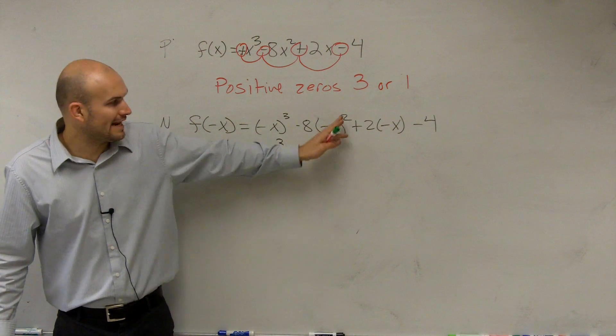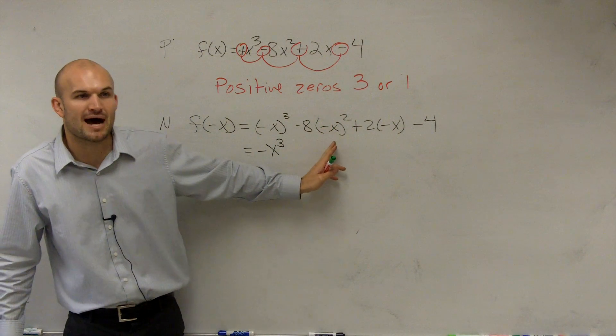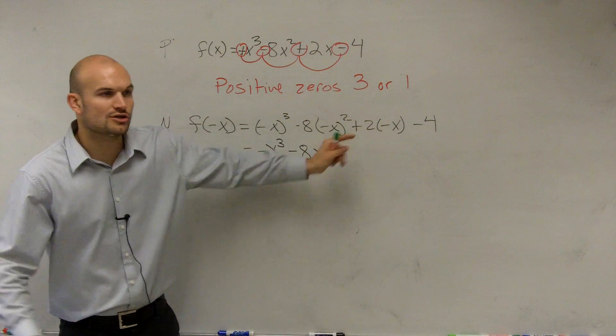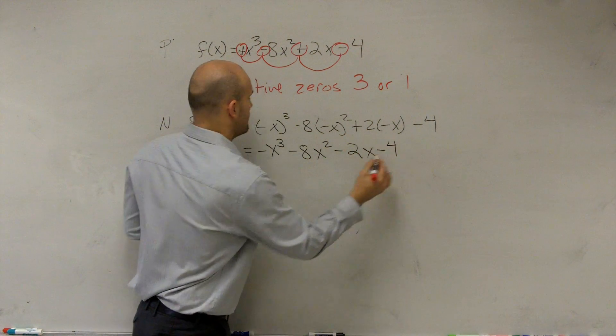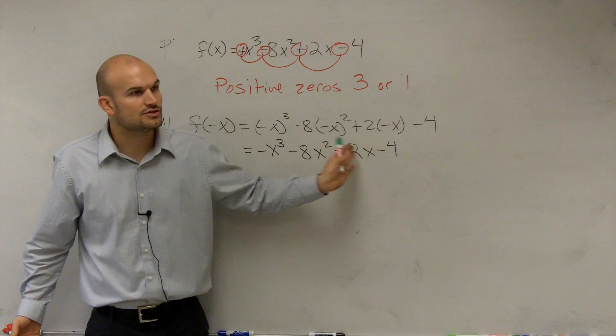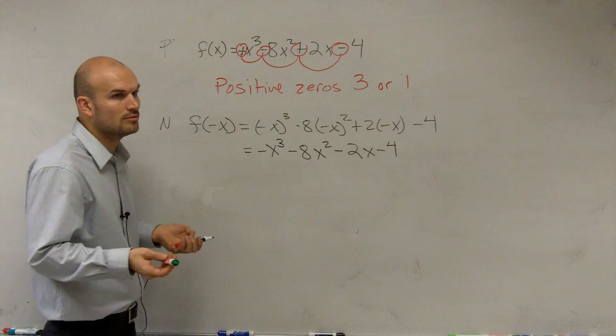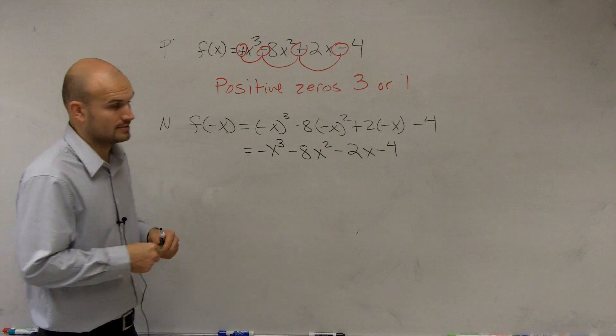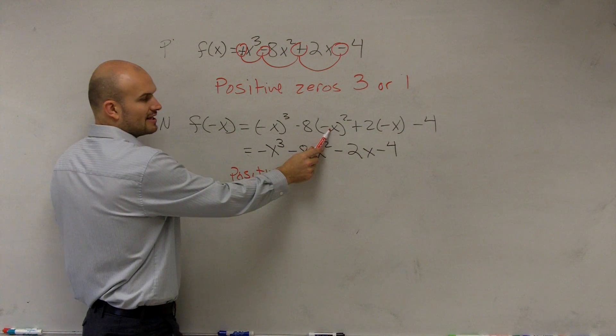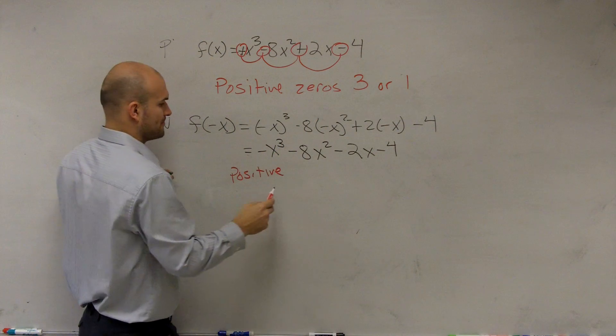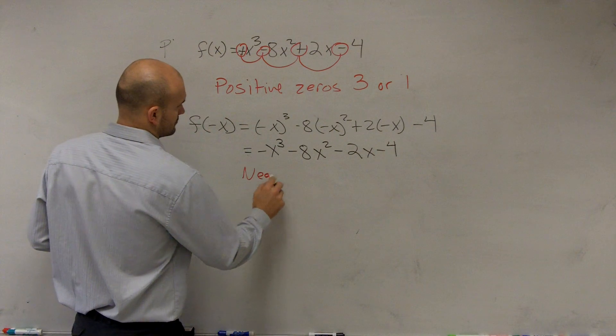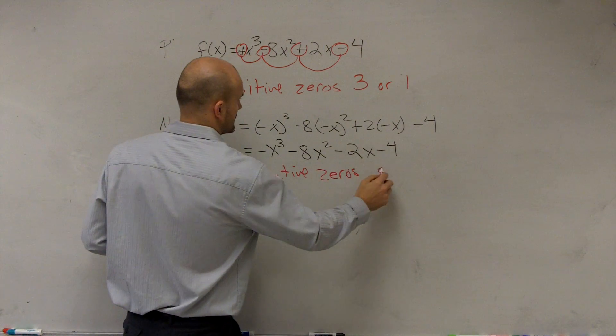Any negative number raised to an odd power is still going to be negative. Any negative number raised to an even power will always be positive. So now this is a positive x². Positive x² times negative 8 is a negative 8x². Negative x times 2 is now a negative 2x minus 4. So we look at this. Do we have any negative zeros? No. There's no sign changes now. So there is 0 negative zeros.